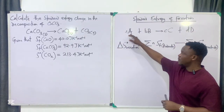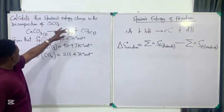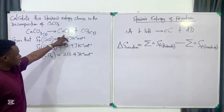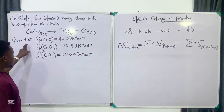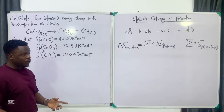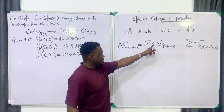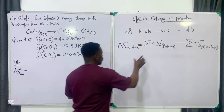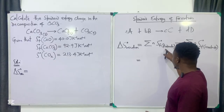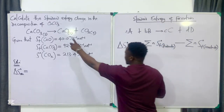This concept shows us how to solve for the entropy change of a reaction when we know the entropy change for each species involved. The question says: calculate the standard entropy change in the decomposition of calcium carbonate. Calcium carbonate (limestone) decomposes to calcium oxide and carbon dioxide. They give us the entropy of formation of CaO, CaCO₃, and CO₂. To solve this, we apply the formula. We start with the products — the coefficient of each product is one.